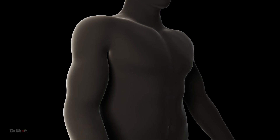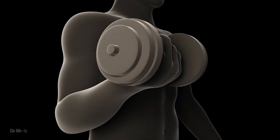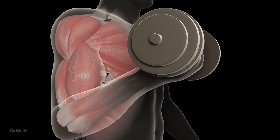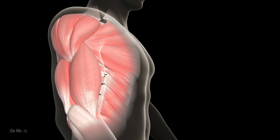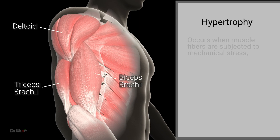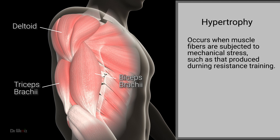To understand how muscle growth occurs, we need to look at the cellular level. Muscle growth, or hypertrophy, occurs when muscle fibers are subjected to mechanical stress, such as that produced during resistance training.